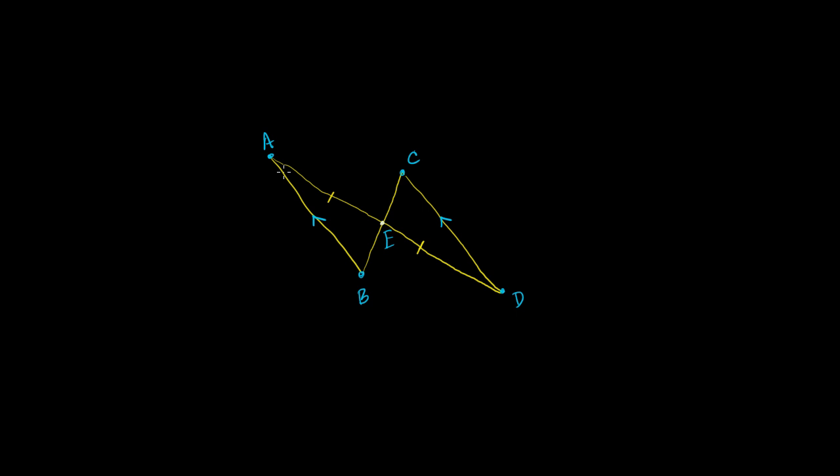So we have these two parallel lines, line segment AB and line segment CD. They're parallel line segments. And then we have these transversals that go across them. So you have this transversal BC right over here, and you have this transversal AD.